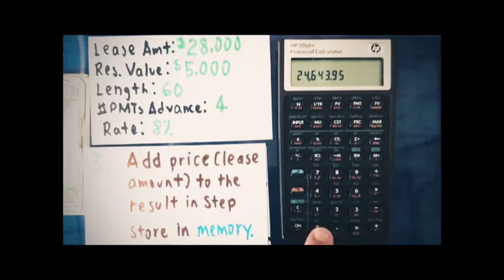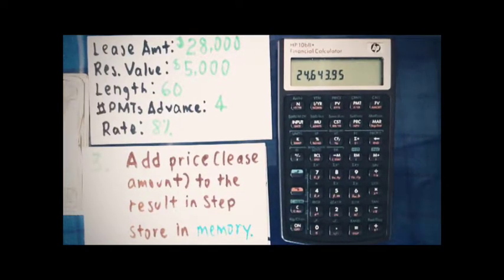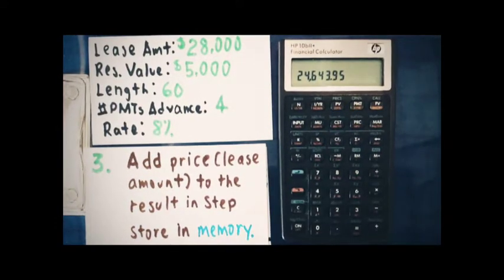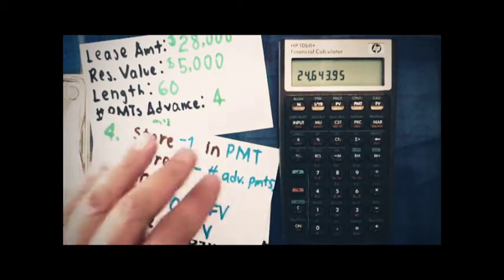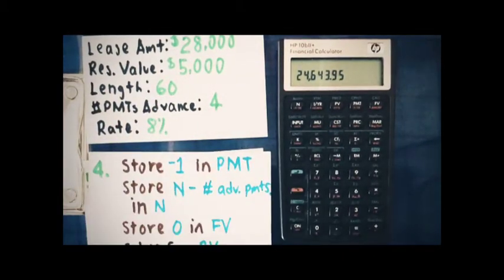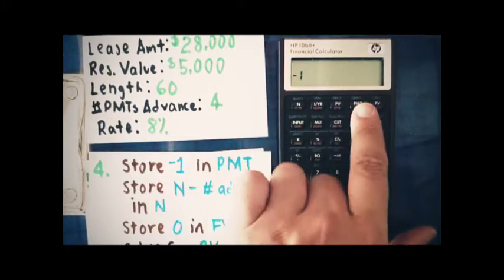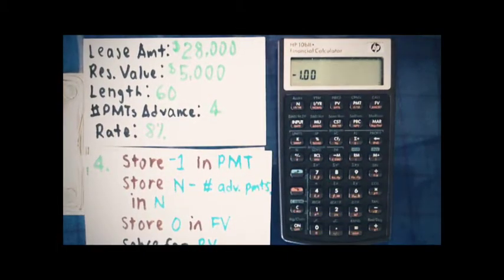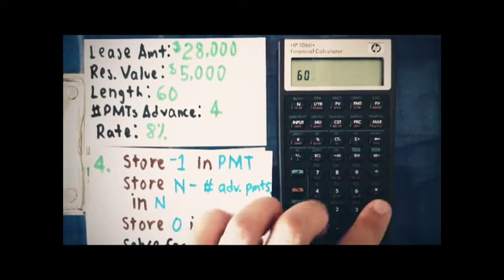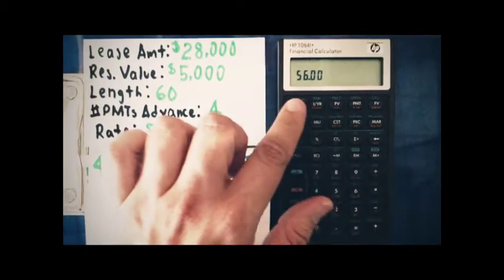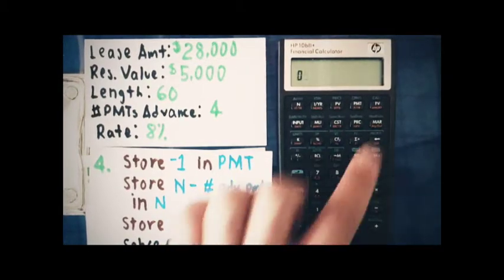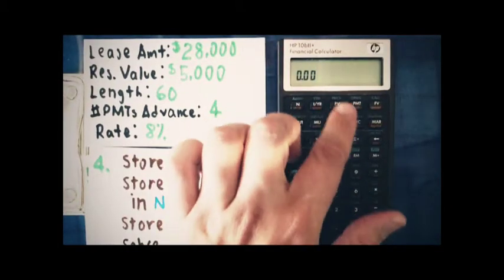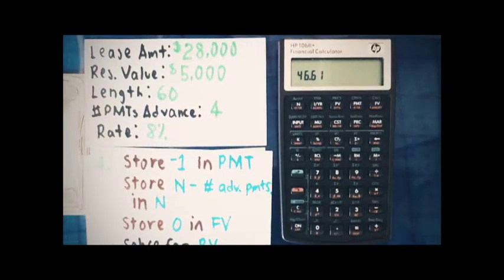On this particular calculator I have to press orange shift, then this key to store the amount into memory. Moving to the next step, we type negative 1 into payment. This lease requires four payments in advance, so we go 60 minus 4 and store 56 in N. Then store 0 in future value. The interest rate is maintained. We calculate the present value, which is 46.61.